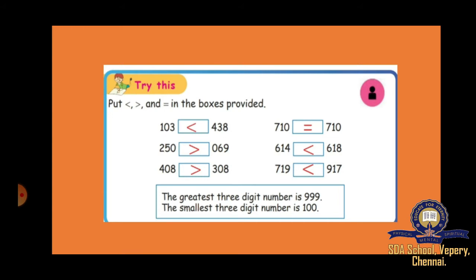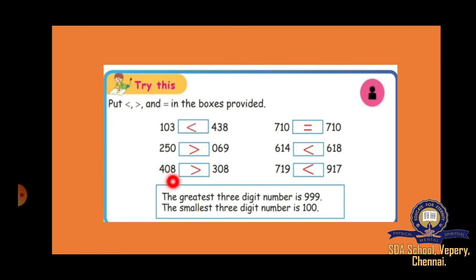Next, greater than, less than, and is equal to. What is the greater than symbol? This is the greater than symbol. This is the less than symbol. This is equal to. For example, 710 is equal to 710. This is the way you have to fill the boxes.